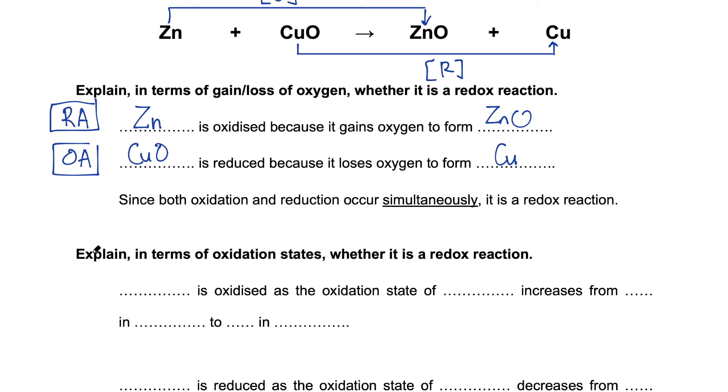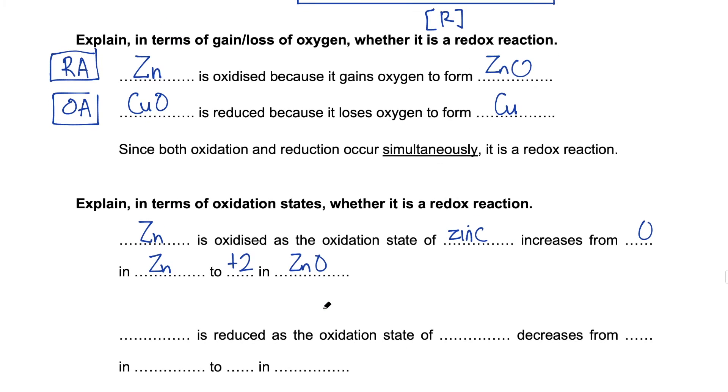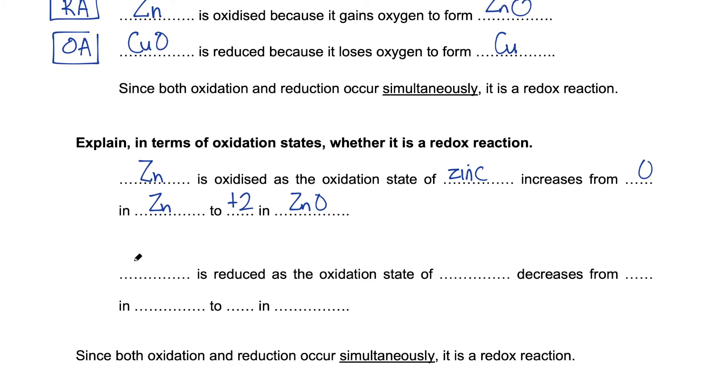We can also look at this reaction in terms of oxidation state. The answer is the same. Zinc is oxidized. CoO is reduced as the oxidation state of the element zinc increases from 0 in Zn to plus 2 in ZnO. CoO is reduced as the oxidation state of copper decreases from plus 2 in CoO to 0 in Cu.